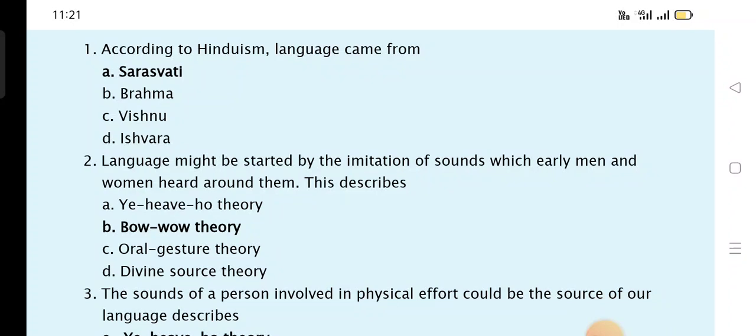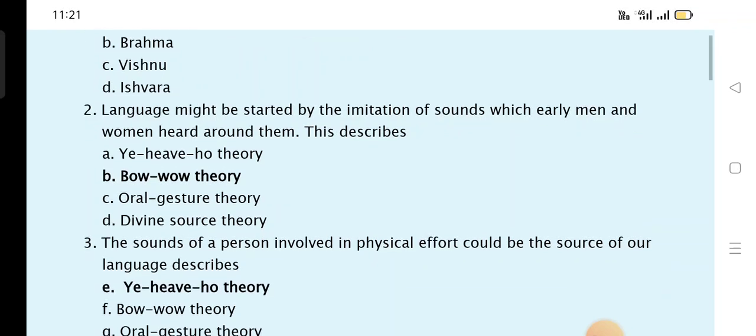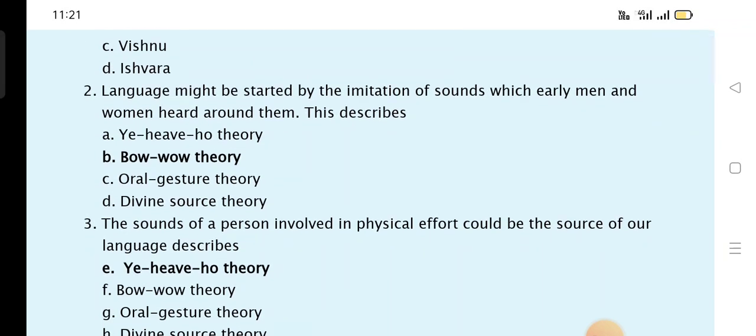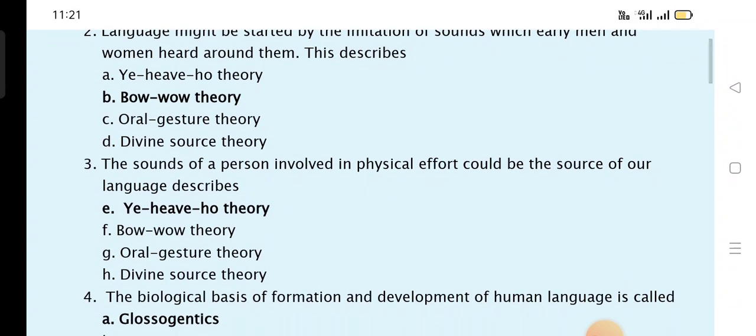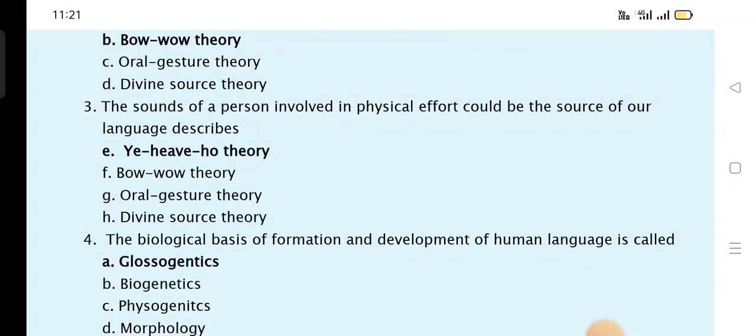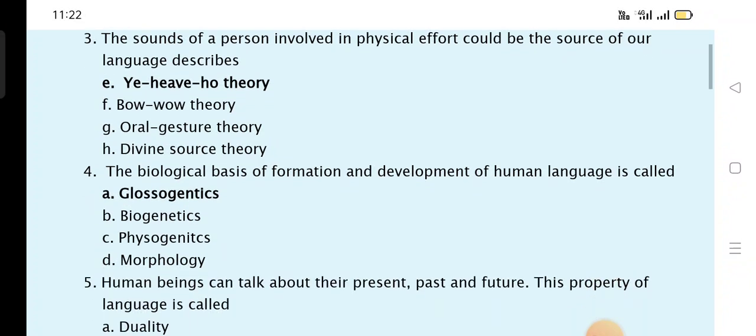The first question: regarding Hinduzean language came from Saraswati. Language might be started by the imitation of the sounds which early men and women heard around them. This describes the bow-wow theory. The sound of the person involved in the physical effort could be the source of our language describes Ye-heave-ho theory.